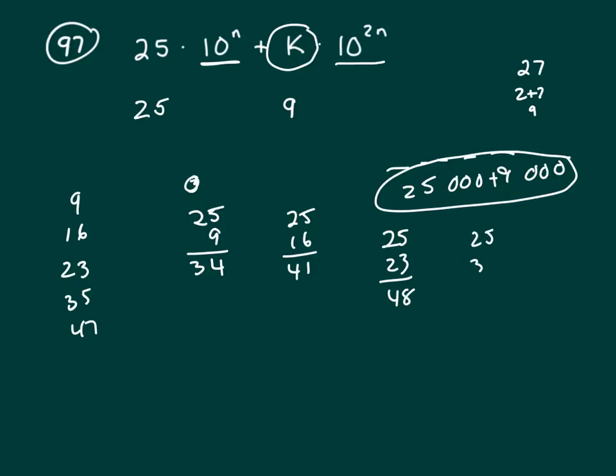What about 25 and 35? Well, that's 60. That doesn't work. Well, it's got to be the last one. Sum of 25 and 47. That's 72. 9 goes into 72. So my K would have to be 47.